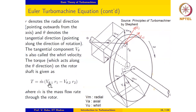Since we are evaluating the torque exerted on the rotor, we change the sign. So this is written as M-dot times (Vθ1·R1 minus Vθ2·R2).